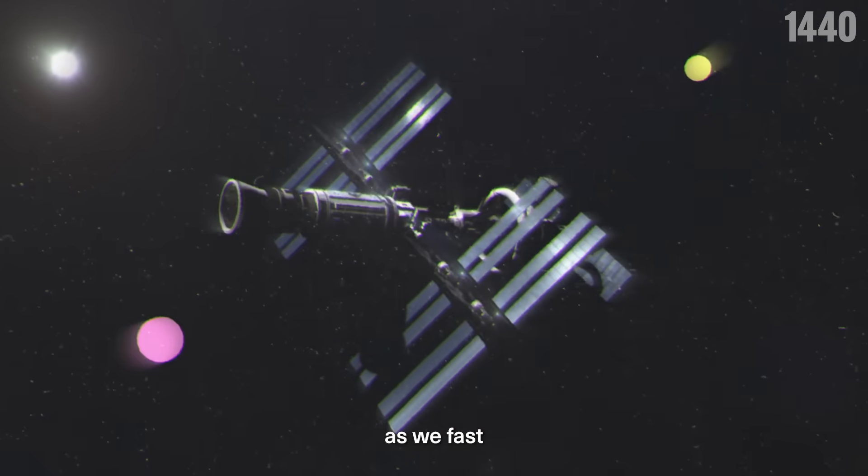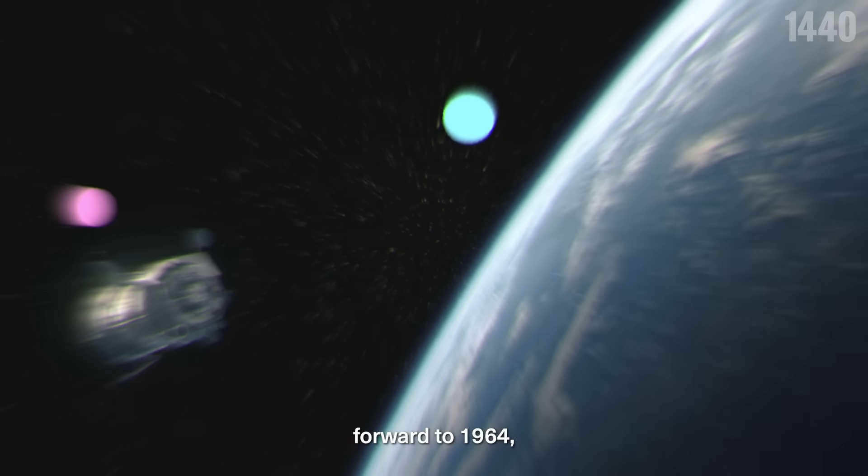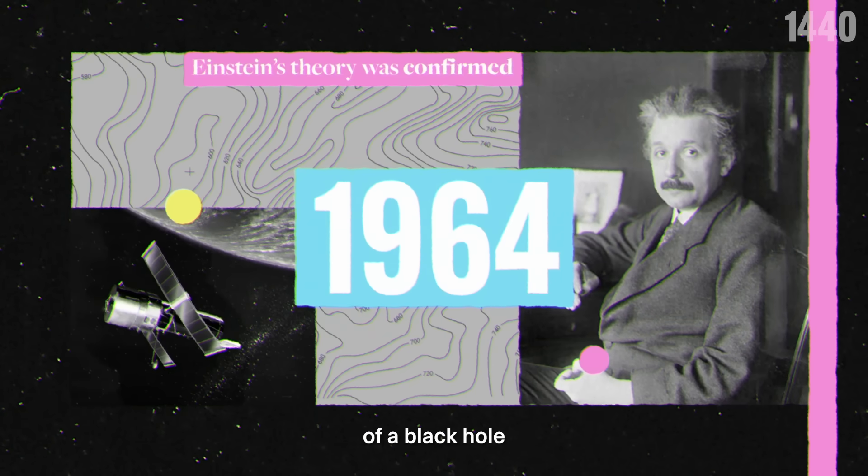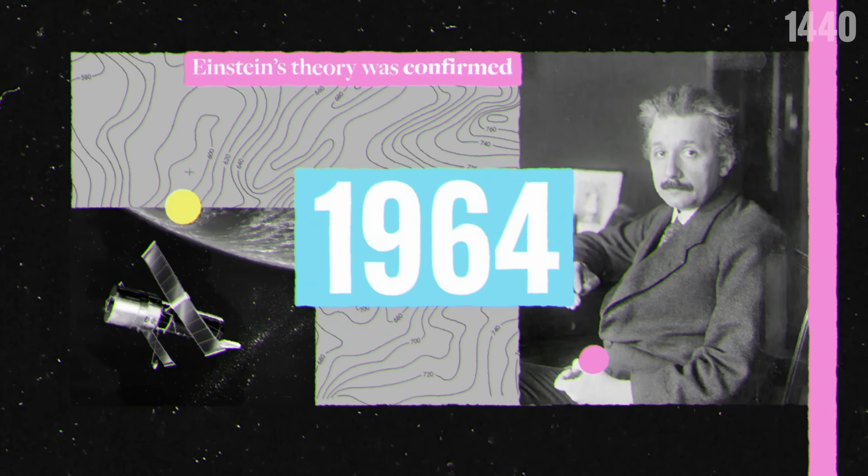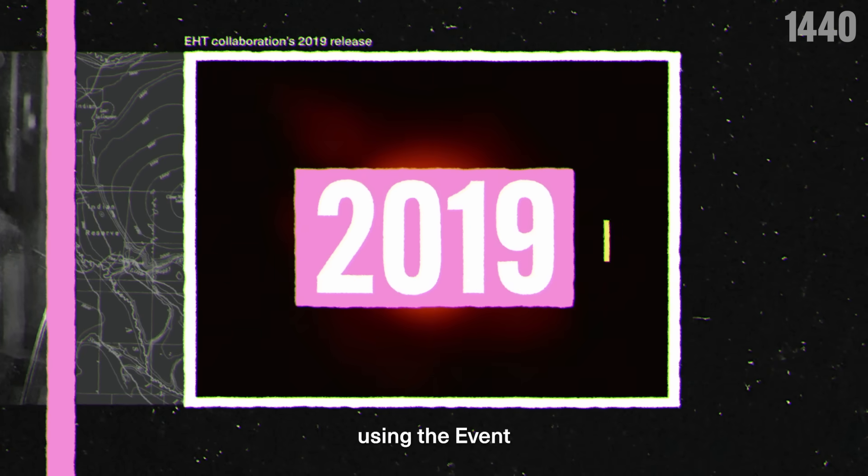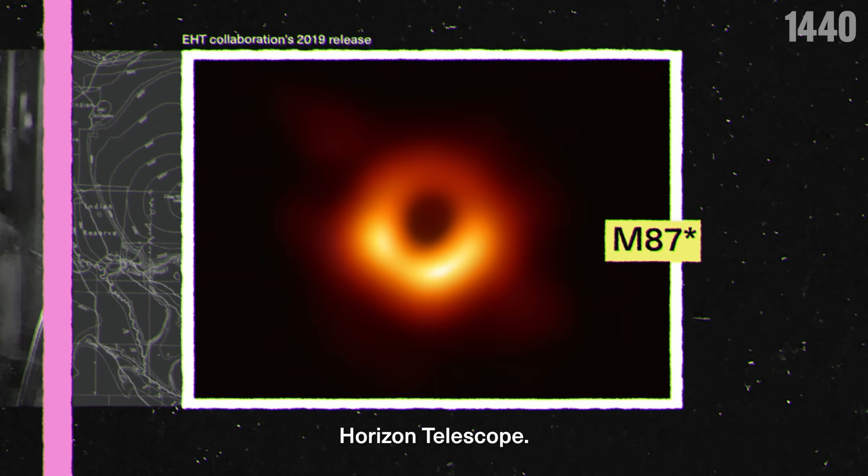Now keep this in mind as we fast forward to 1964, when Einstein's theory was confirmed and the first signs of a black hole were ever observed. But it wouldn't be until 2019 that we would receive the first image of a black hole using the Event Horizon Telescope.